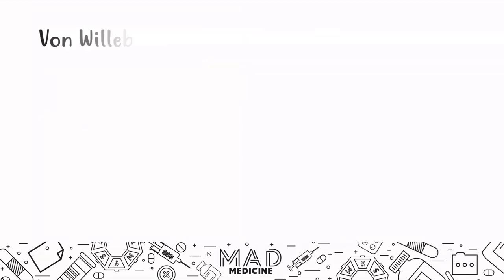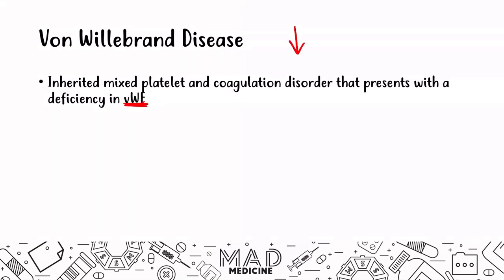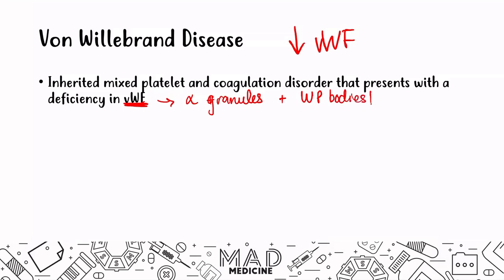Let's talk about VWF and von Willebrand disease. This disease is an inherited mixed platelet and coagulation disorder, and usually presents with a deficiency in VWF. That is the main hallmark — you'll see decreased VWF activity, mainly due to decreased VWF production. VWF is produced in the alpha granules of platelets and the Weibel-Palade bodies of endothelial cells. Those are the two main locations where VWF is produced.